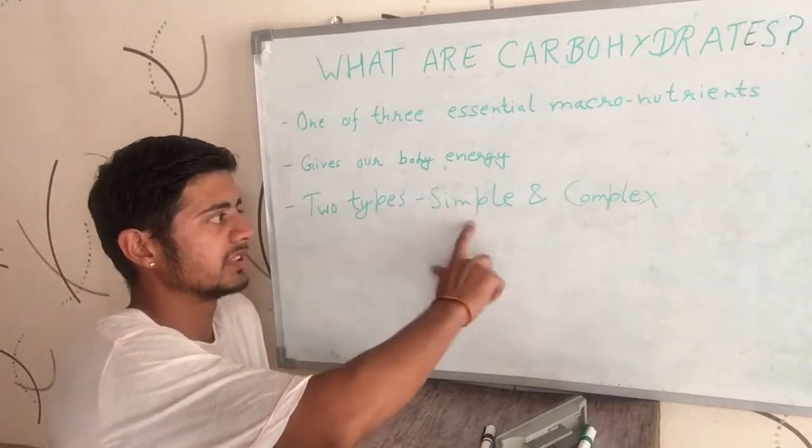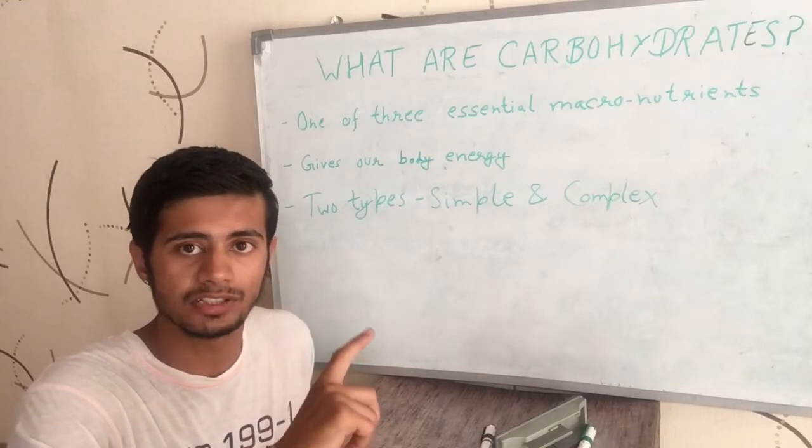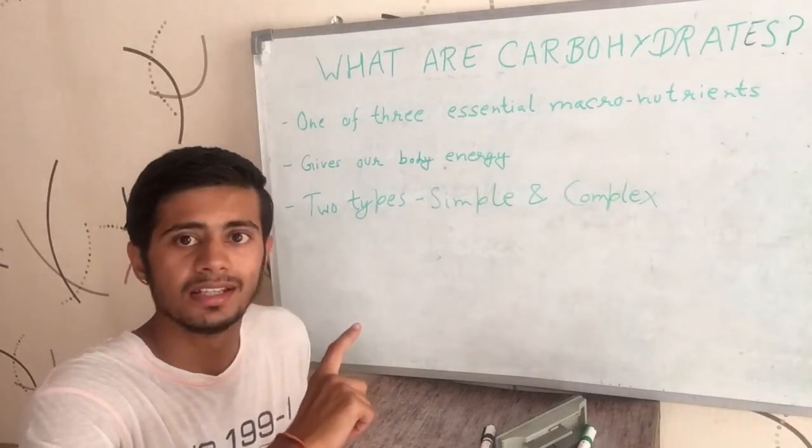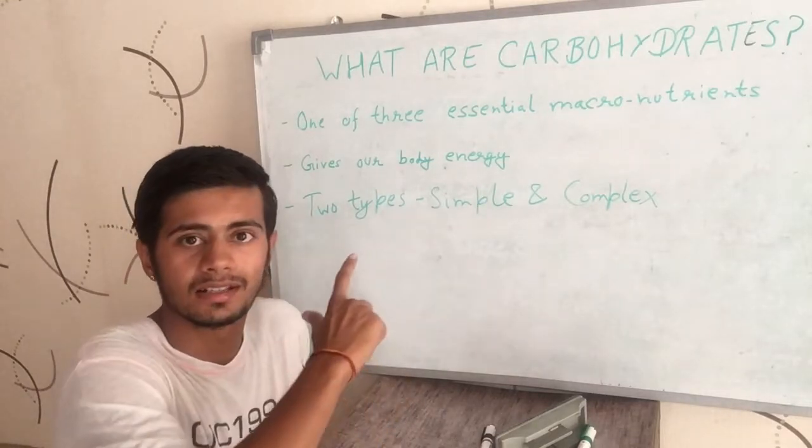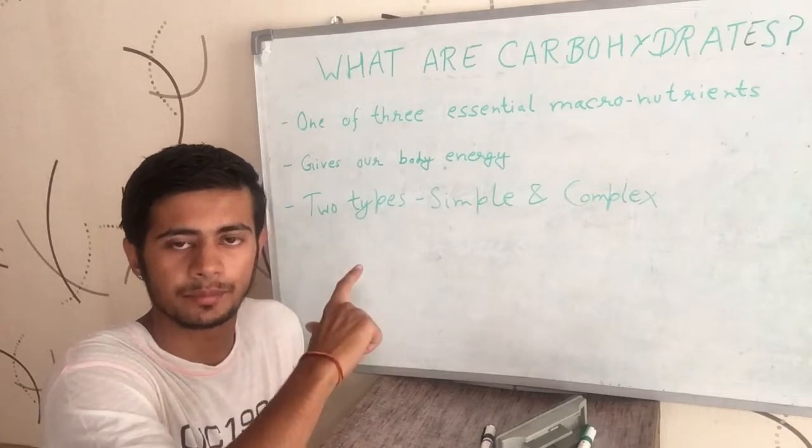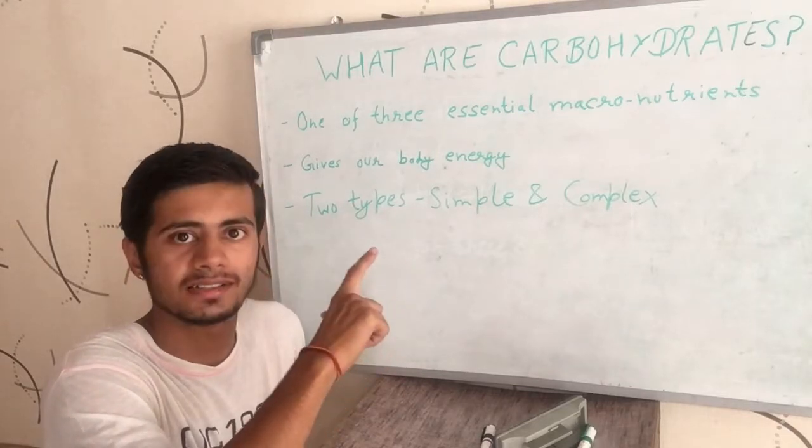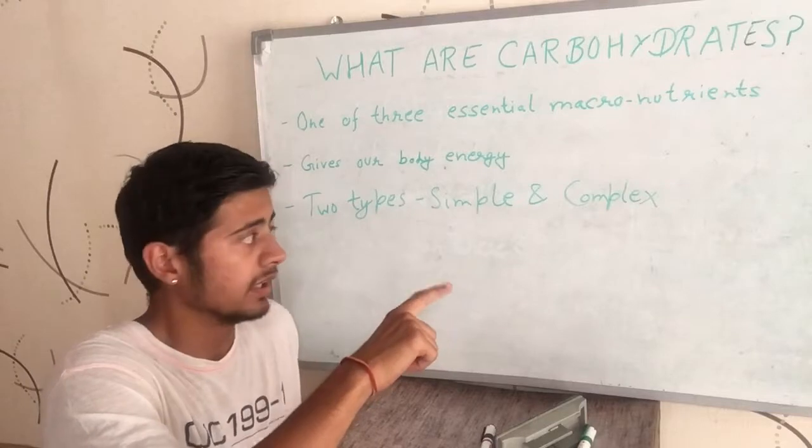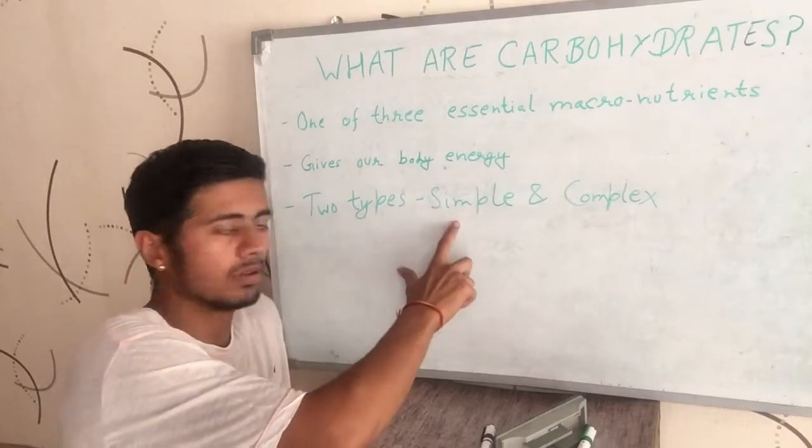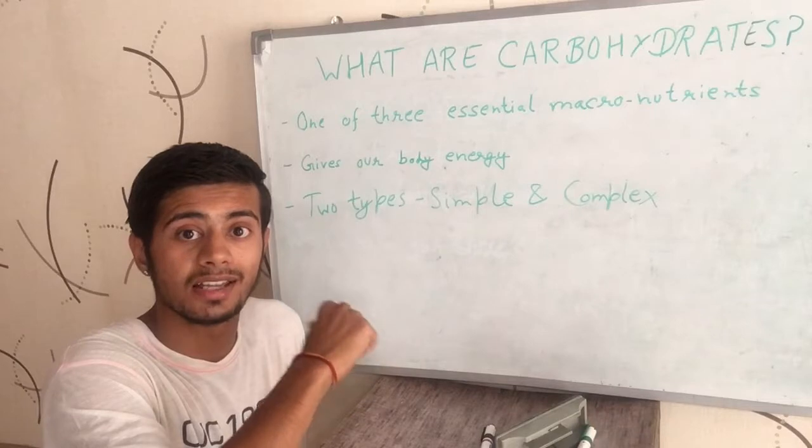There are two types of carbohydrates: simple and complex. The main difference between these two is that simple carbohydrates get digested quickly, and complex carbohydrates take some time to digest.